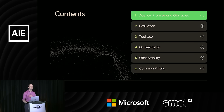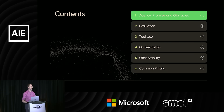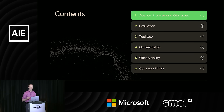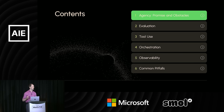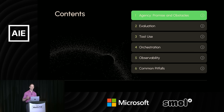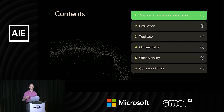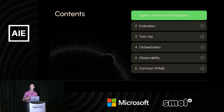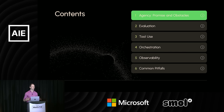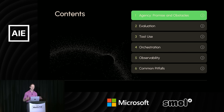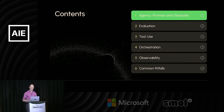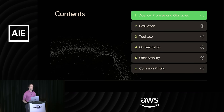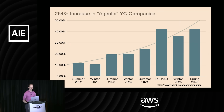To give a brief overview of what I'll be covering: I'll be talking about the promise and obstacles we're seeing so far in agentic development, the core components required to build really effective AI systems that get to production, and then some of the common pitfalls and lessons.